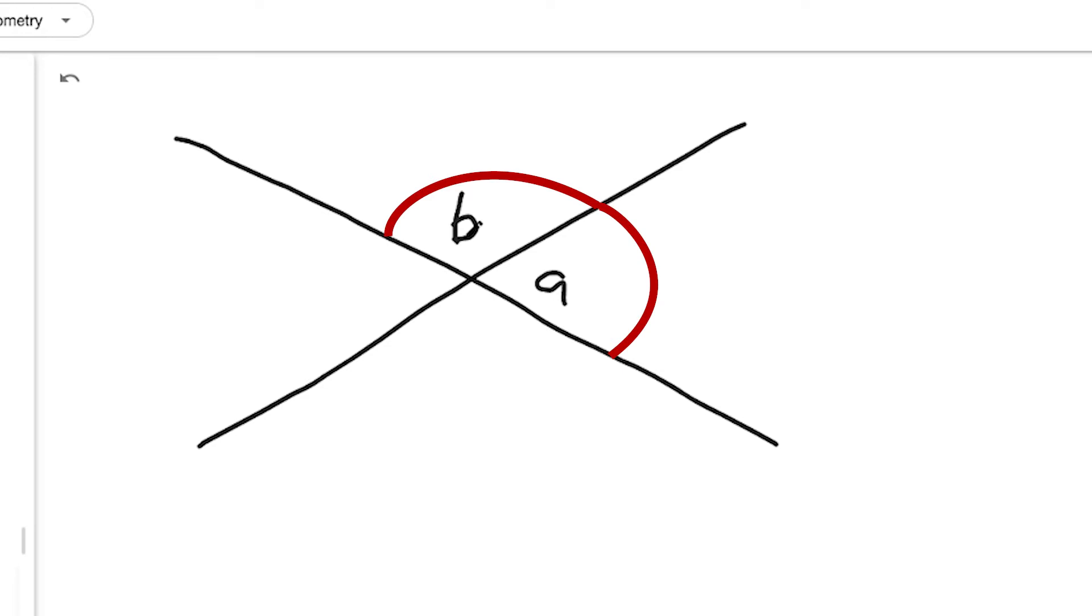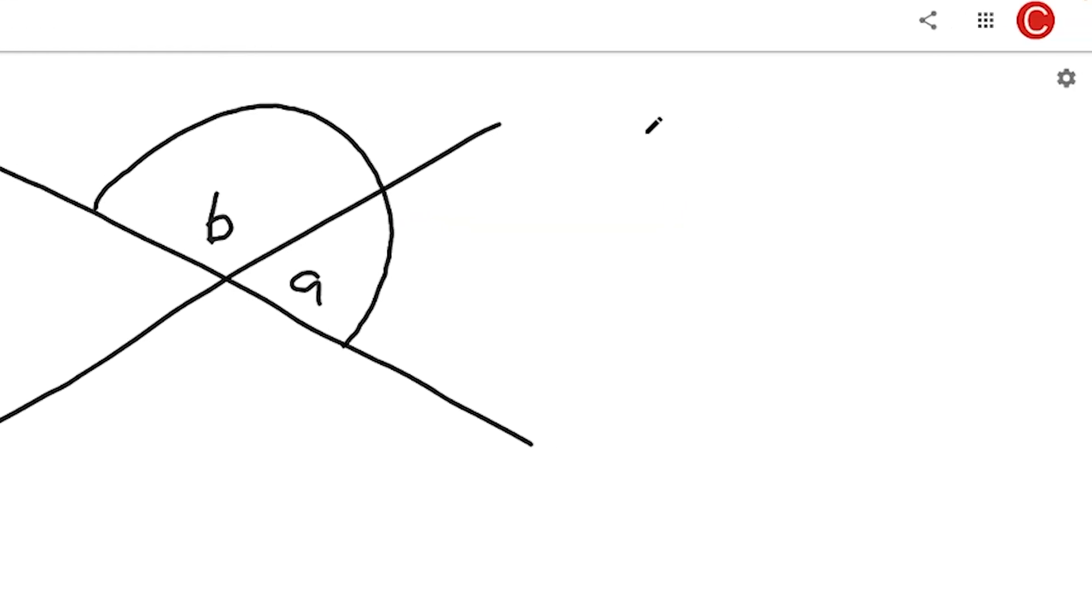One thing that we can notice about this is that we have a straight line here, and we have angles A and B, which are supplementary, which means that two of them together, they sum to 180 degrees, or half a circle. So, we could write that as an equation: A plus B equals 180.